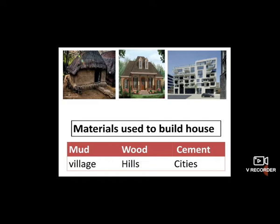The third type of house is a cement house. We all know that cement houses are found mostly in cities like Delhi, Chennai, and Mumbai — as we also learned in our last chapter.